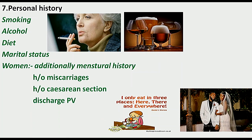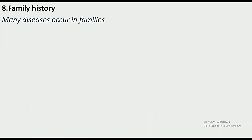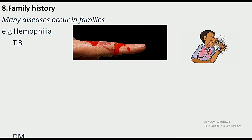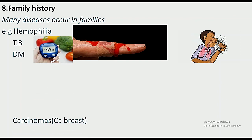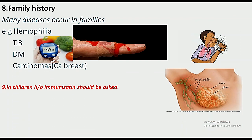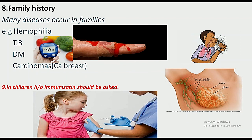Menstrual history includes history of miscarriages, surgeries, and vaginal discharge. Family history is important because many diseases run in families — hemophilia, in which blood does not stop after an injury, tuberculosis, diabetes, and carcinomas like carcinoma of the breast. In children, history of immunization is very important and should always be taken.